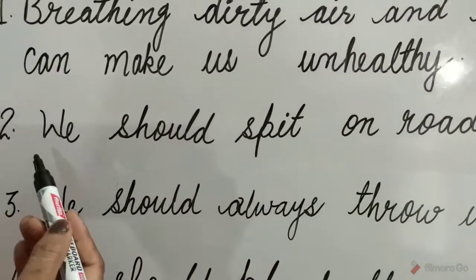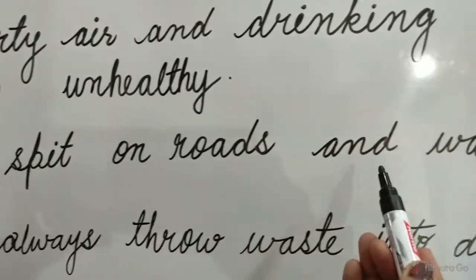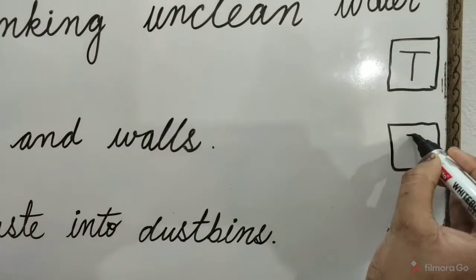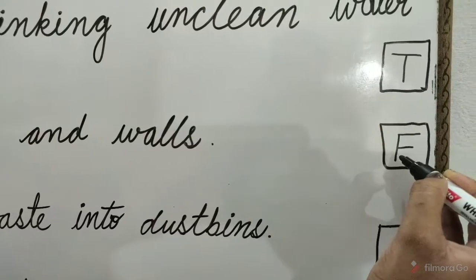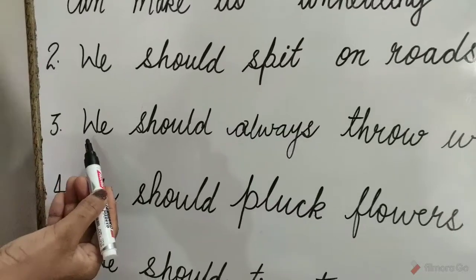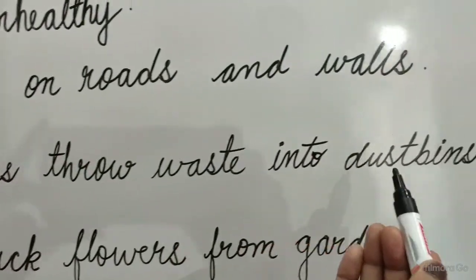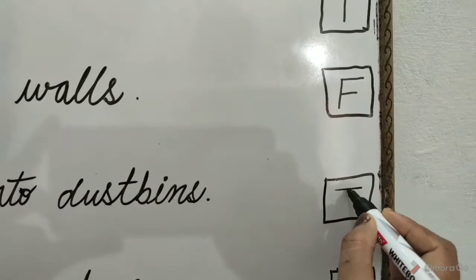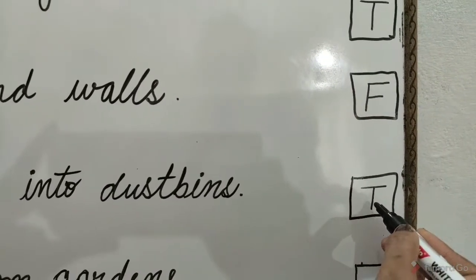Question 2: We should spit on roads and walls. Children, it is false and it is a bad habit. So write F in the box. Question 3: We should always throw waste into dustbins. It is true and it is a good habit. So write T in the box.